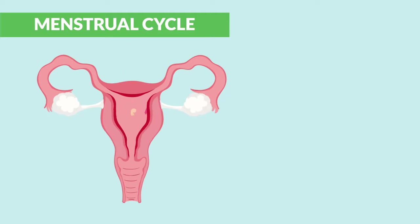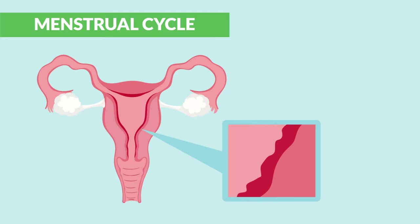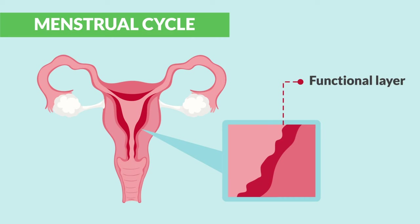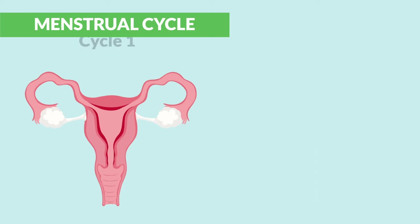The uterus lining is the endometrium and consists of two layers. The top layer is the functional layer, which is shed during monthly menstrual cycles. And underneath is the second layer, the basal layer, which aids in the feeding of the top functional layer.